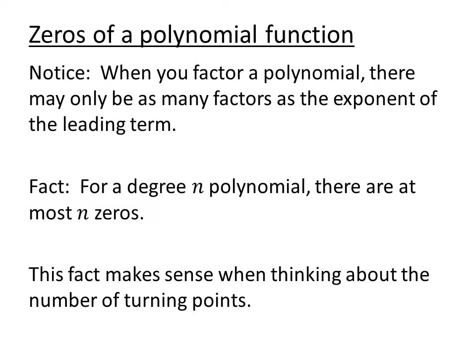When you factor a polynomial, there may be as many factors as the exponent of the leading term. This means if you have a degree n polynomial, there will be at most n zeros. This also makes sense with turning points — a degree 3 polynomial has at most 2 turning points, and if you draw a shape that only turns twice, it can only pass the x-axis in at most 3 points.